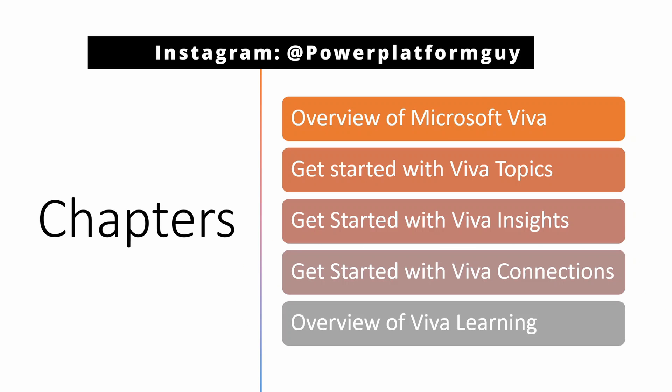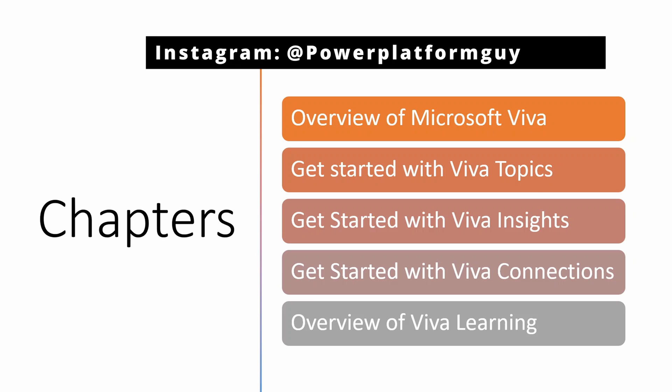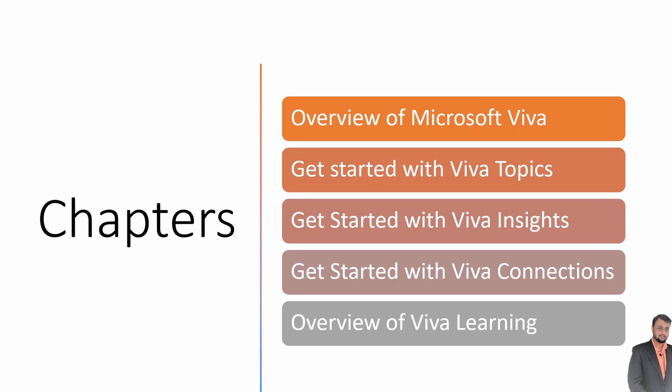I divided this entire Viva series into five different parts. During the first part of this series, I am going to talk about what is Microsoft Viva. During the second part, we will get started with the first Viva product which is Viva Topics. In the third part, we will be talking about Viva Insights. We will be discussing three types of insights: employee insights, manager insights, and leader insights. In the fourth part, we will be talking about Viva Connections. And in the fifth part, we will be talking about Viva Learning.